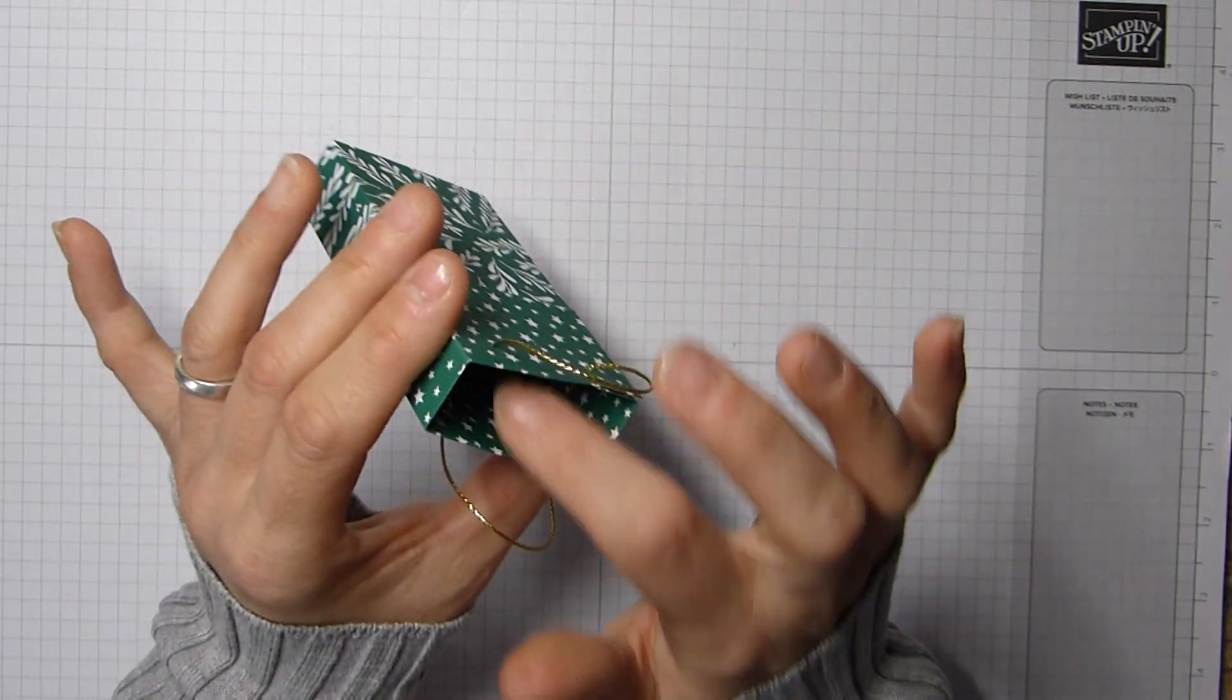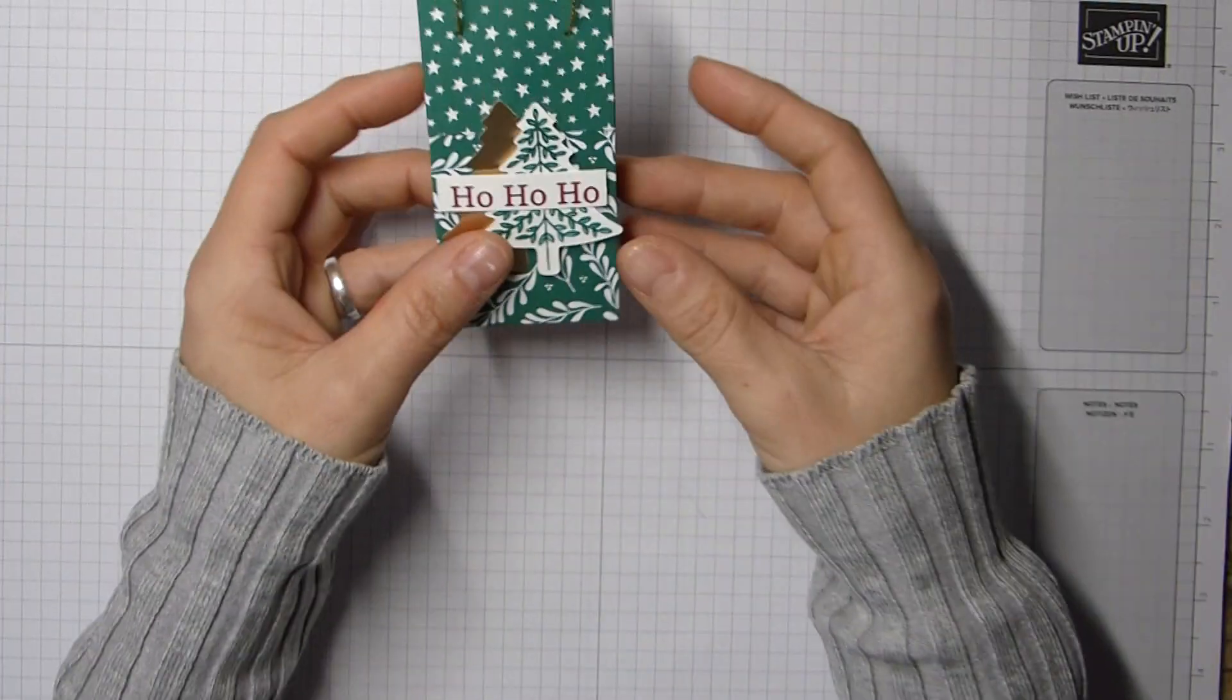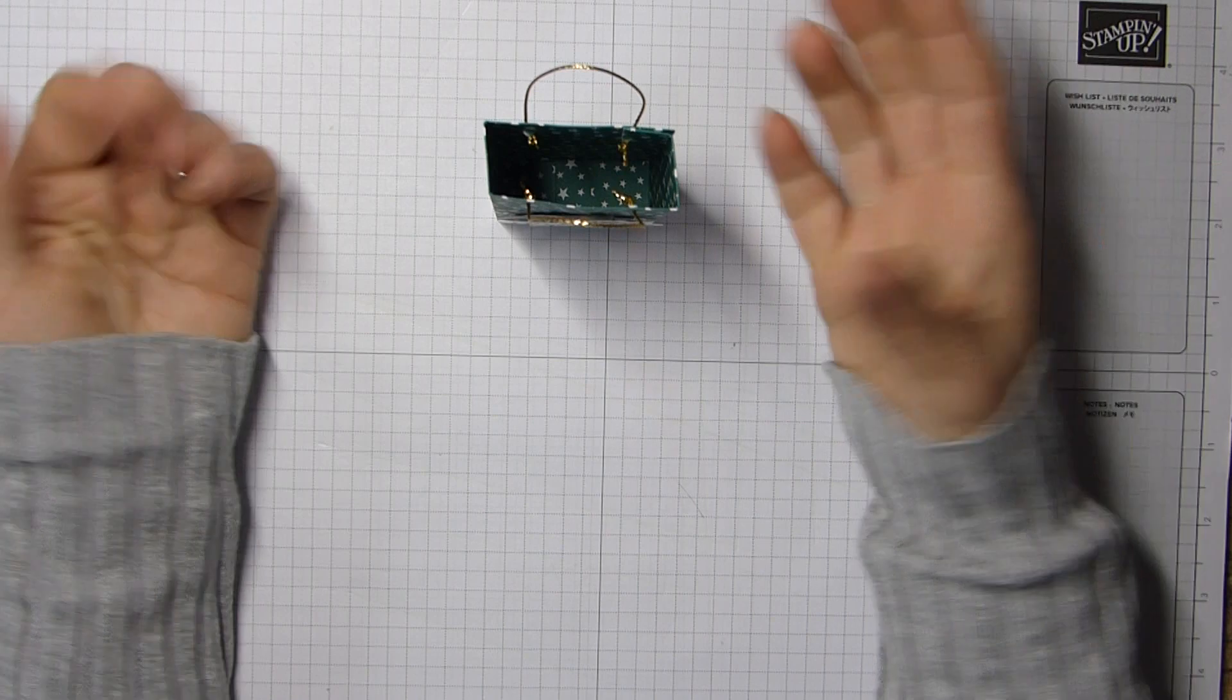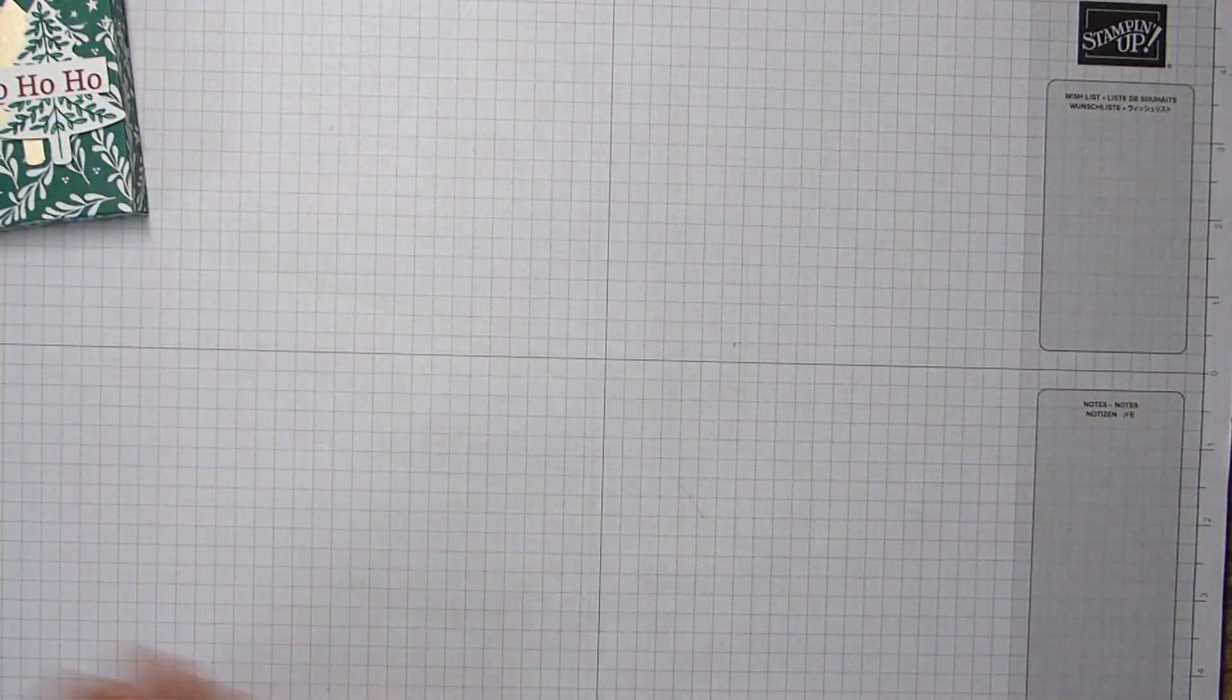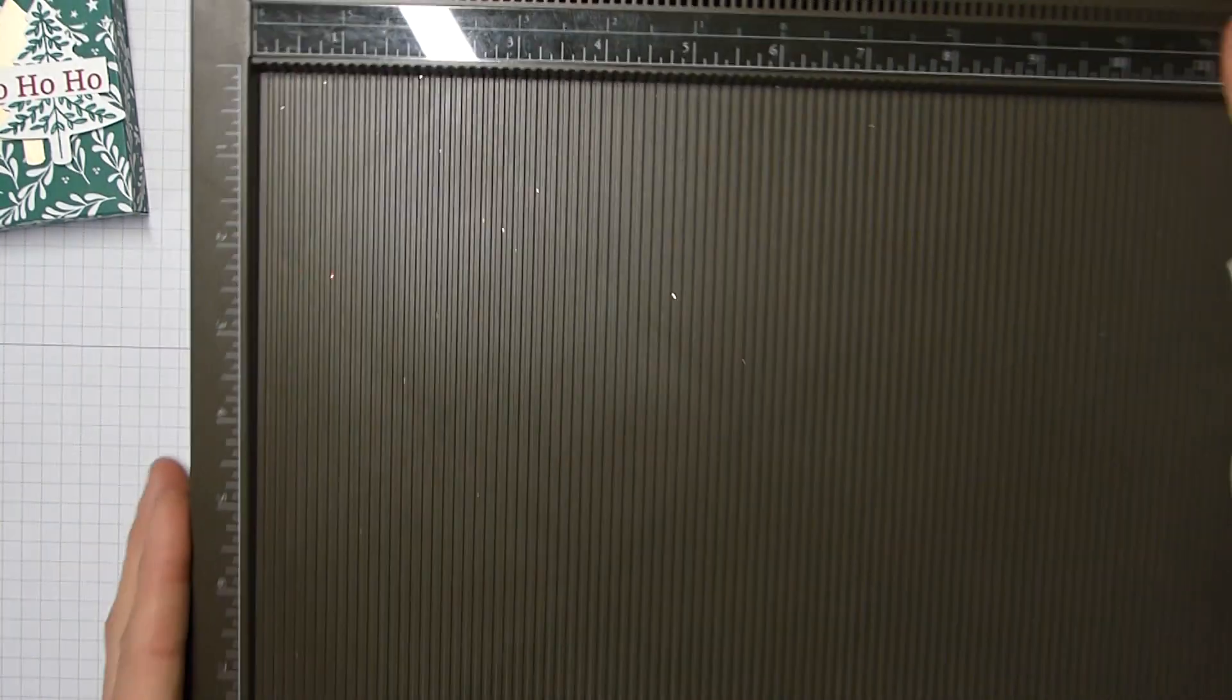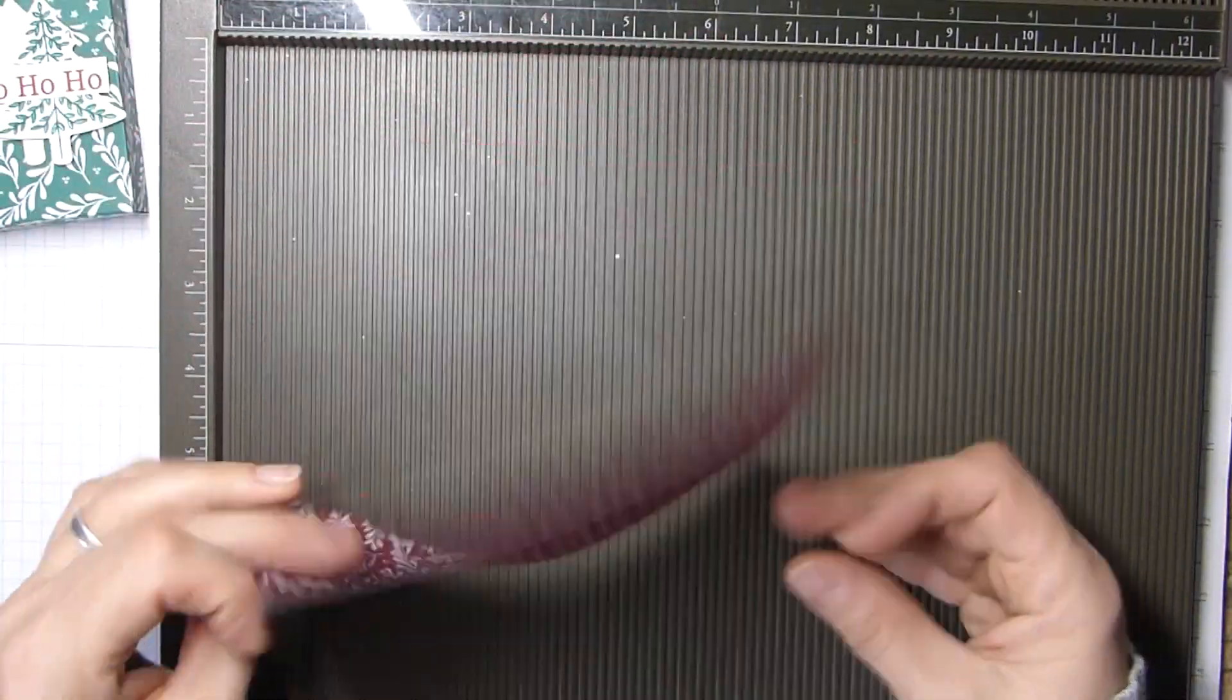You can stuff it with some little treats in there, hang it on a Christmas tree, have it at the table for your favors, anything. But it's cute. So I'm going to show you how I made it. It's really simple and it's from one sheet of six by six DSP, so really, no waste.